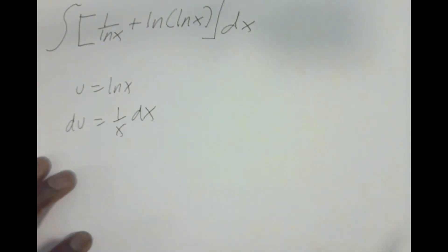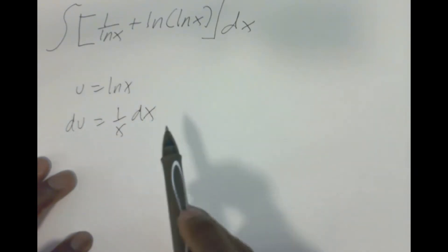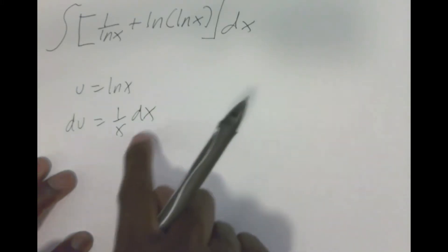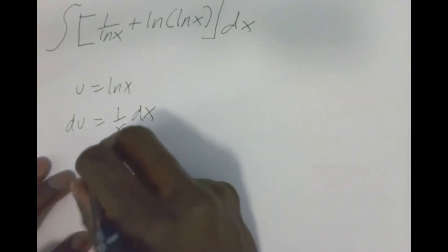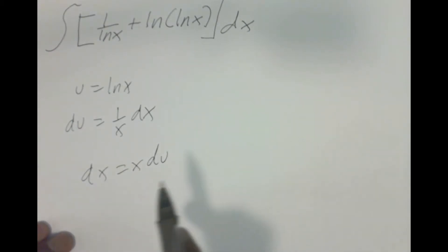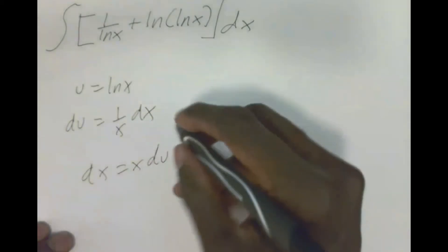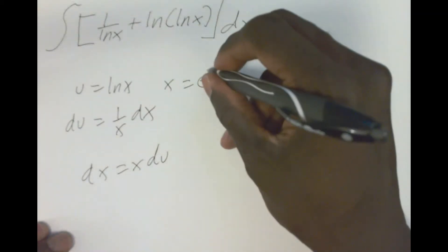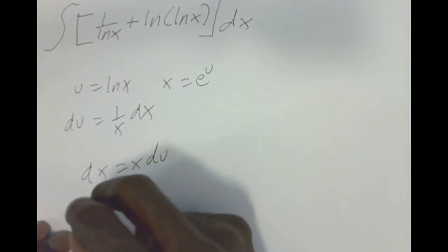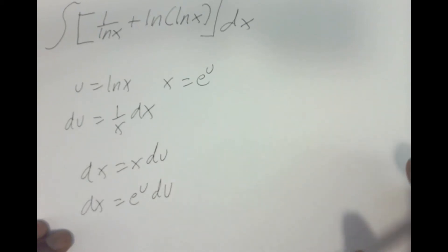These are the more complicated problems when we do our U-substitution — the deal is trying to get stuff to match. We have DU = 1/x · dx, and there's no way we can pull a match out of that. So what we have to do is put things in terms of dx: dx = x · DU. Now we need to represent x in terms of U. If U = ln x, then x = e^U, so dx = e^U · DU.